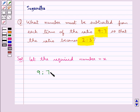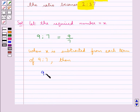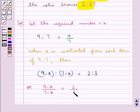The given ratio is 9 is to 7 or you can say this is equal to 9 upon 7. Now, when x is subtracted from each term of the ratio 9 is to 7, then we have 9 minus x is to 7 minus x is equal to 2 is to 3, or we can say 9 minus x upon 7 minus x is equal to 2 upon 3.